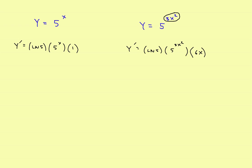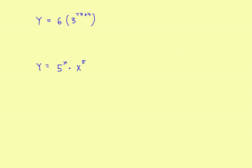In the next problem you've got a constant out in front, which doesn't change things much. y prime equals the constant 6, times the natural log of the base, times the original function — 3 to the 7x plus 4 — times the derivative of the exponent. The derivative of 7x plus 4 is just 7, and the derivative of the constant is 0. Put brackets around the whole thing. Again, the three-part definition.